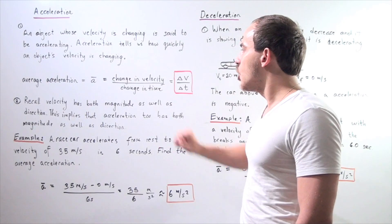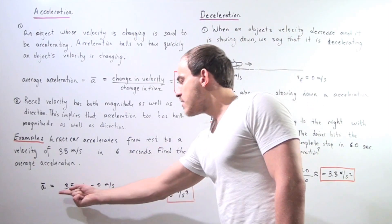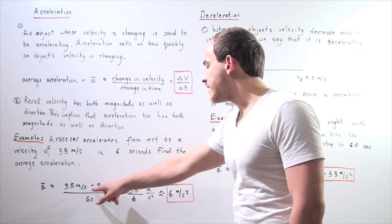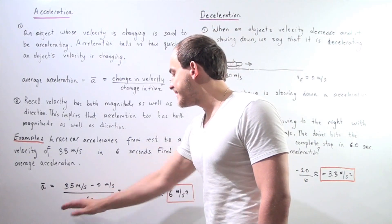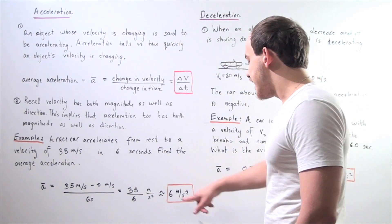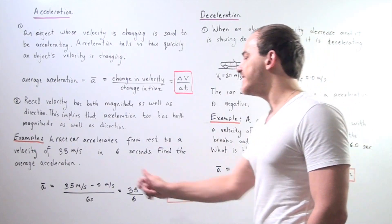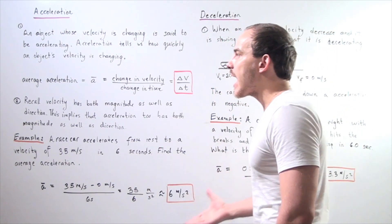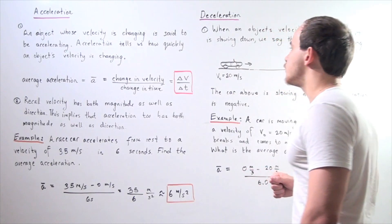So we take that information and plug it into our formula. 35 meters per second minus zero meters per second divided by 6 seconds. We get 35 divided by 6, and we get 6 meters per second squared in the positive direction as our average acceleration.